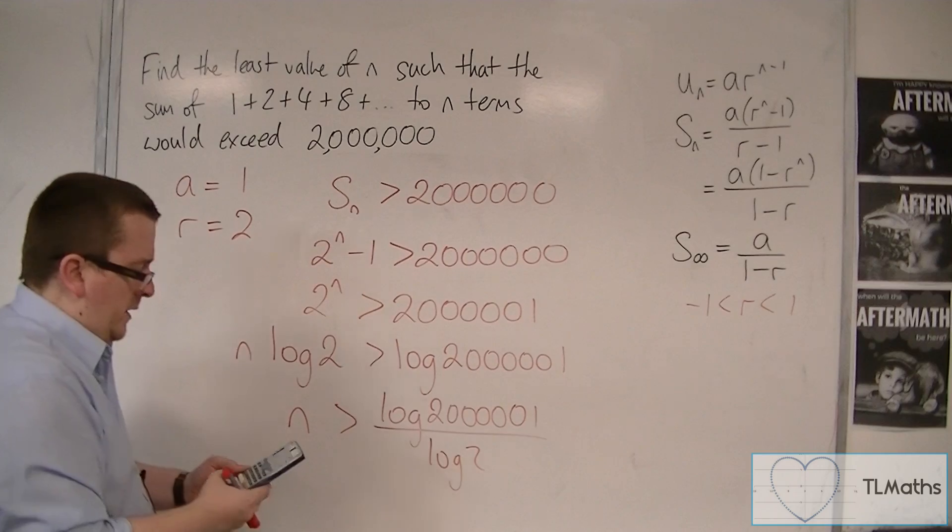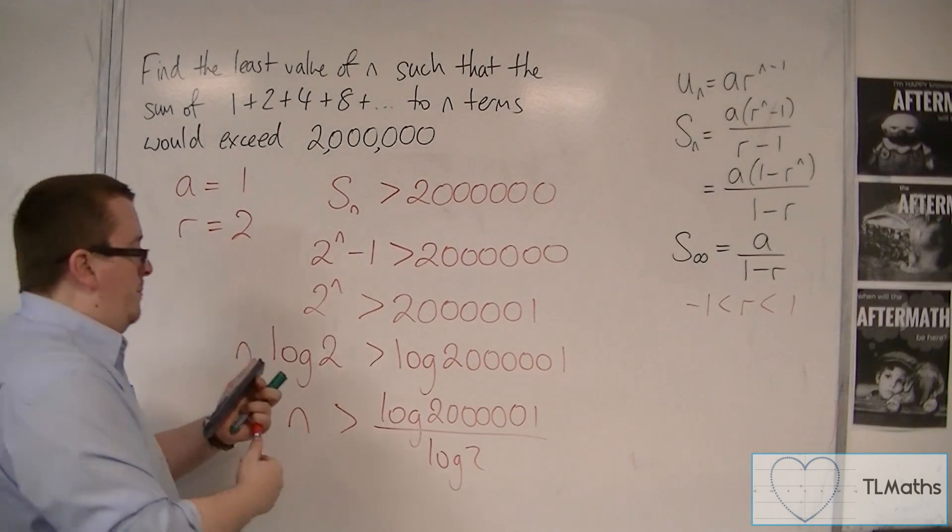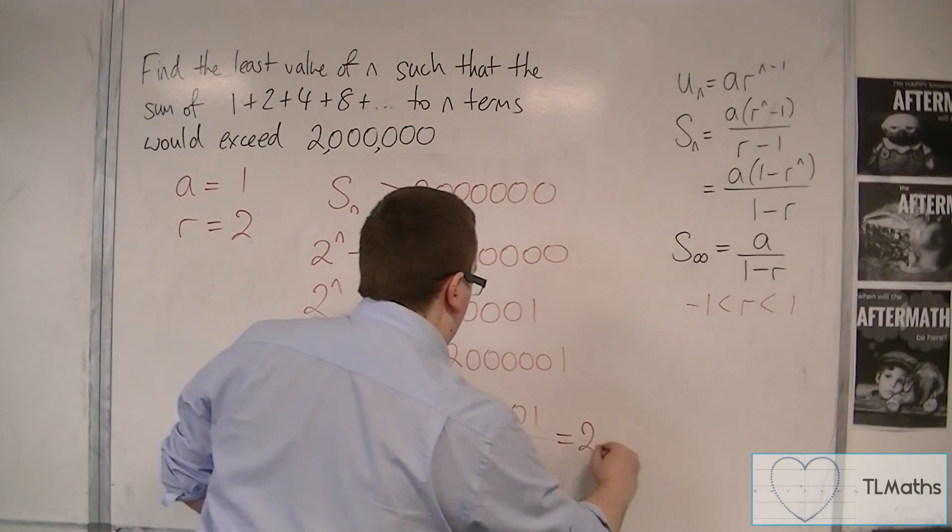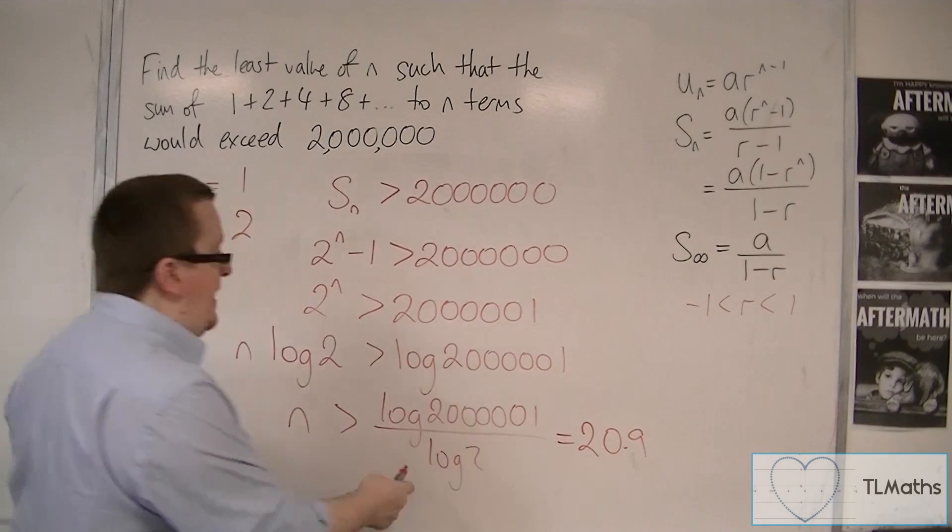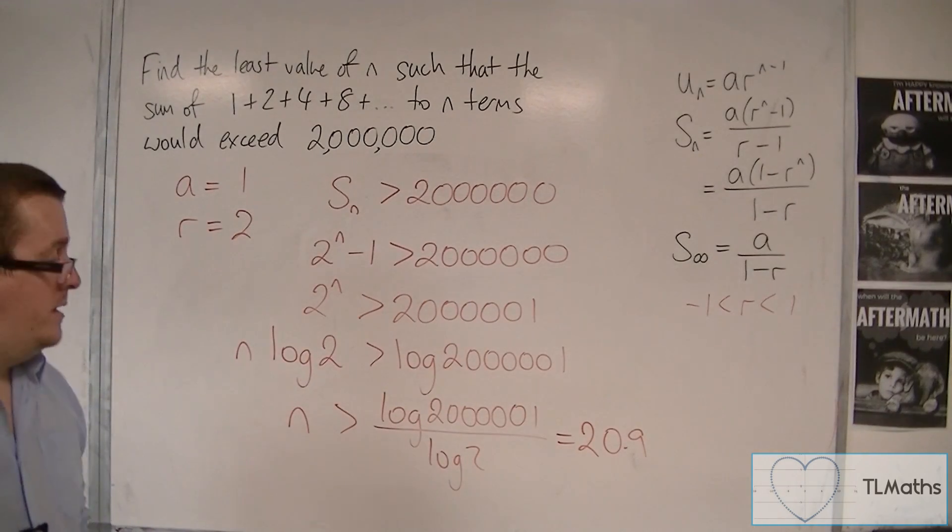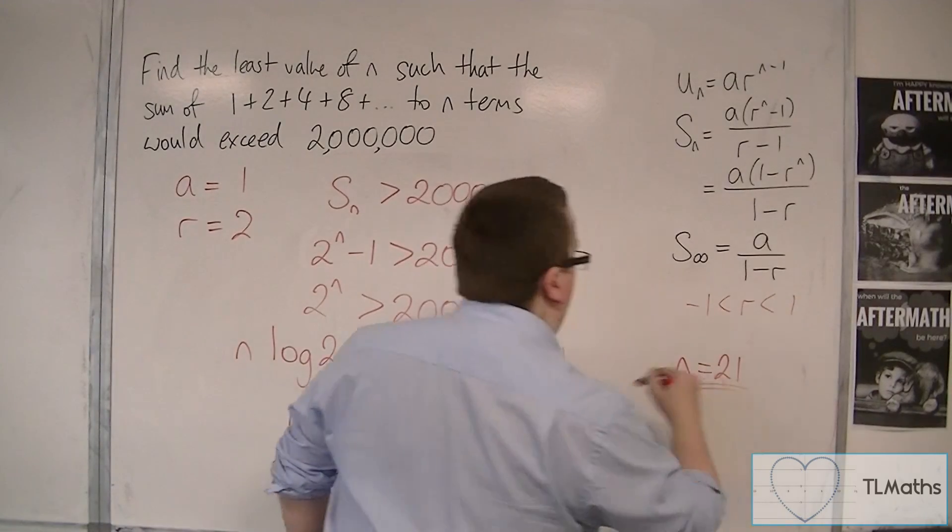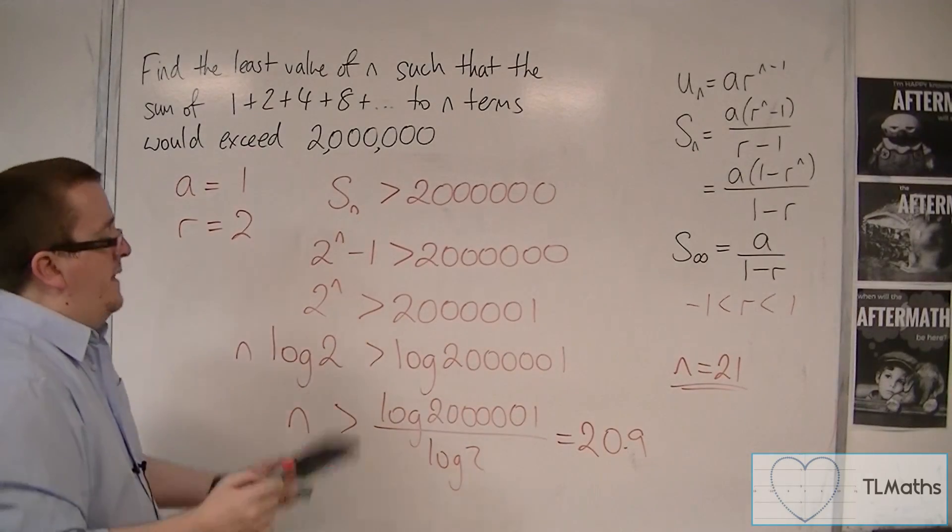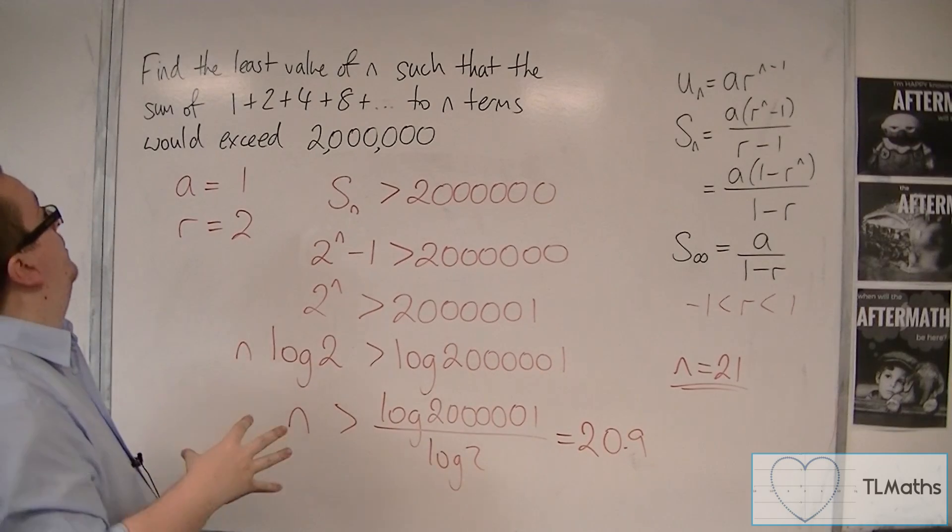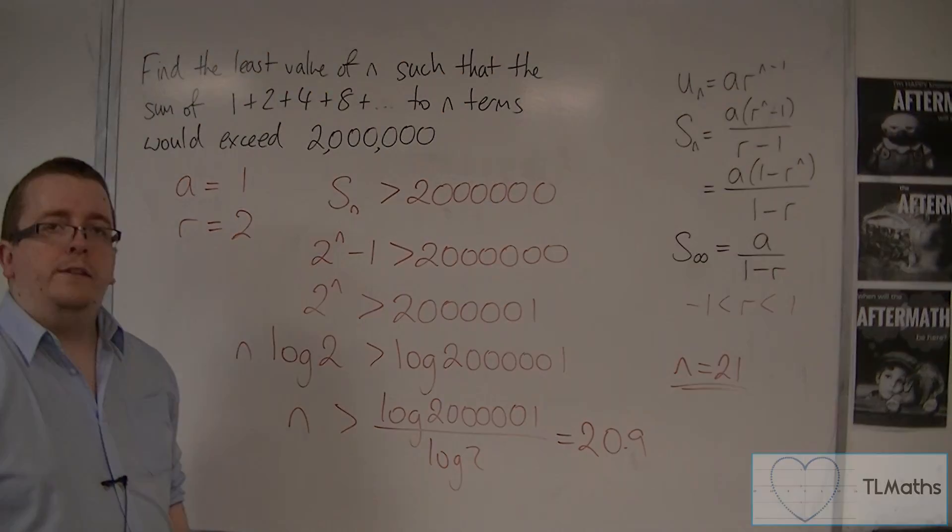So, in other words, n has to be greater than 20.9, and so n would have to be 21. And that solves the problem. There would have to be 21 terms for this first to exceed 2 million.